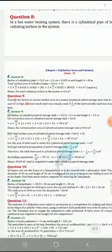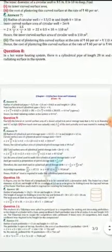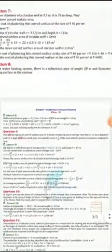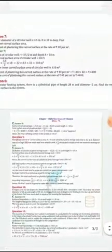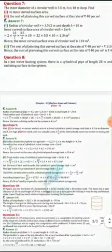After that question number 8. In question number 8, in a hot heating system there is a cylindrical pipe of length 28 and the diameter is 5 centimeter. Find the total radiating surface.